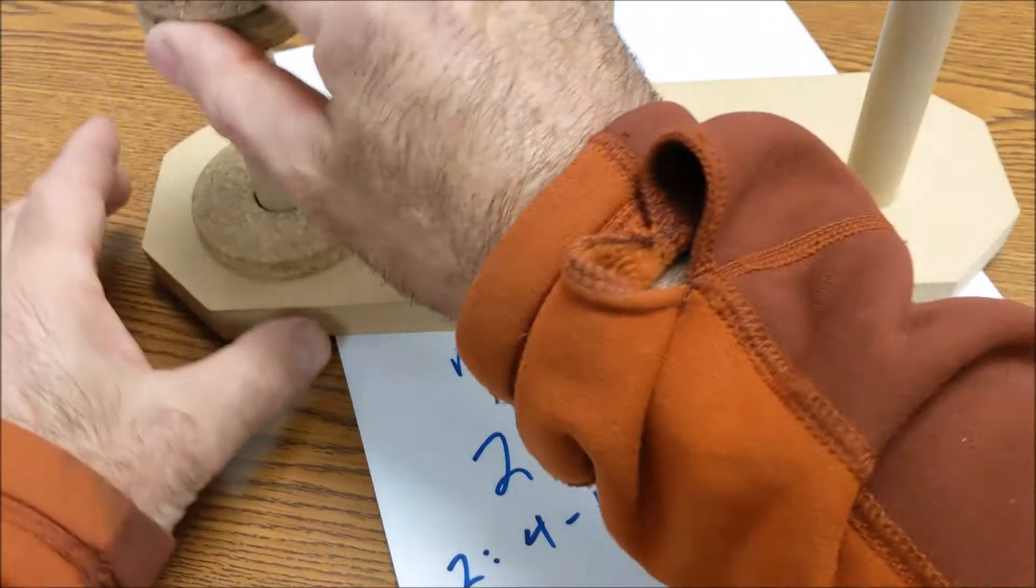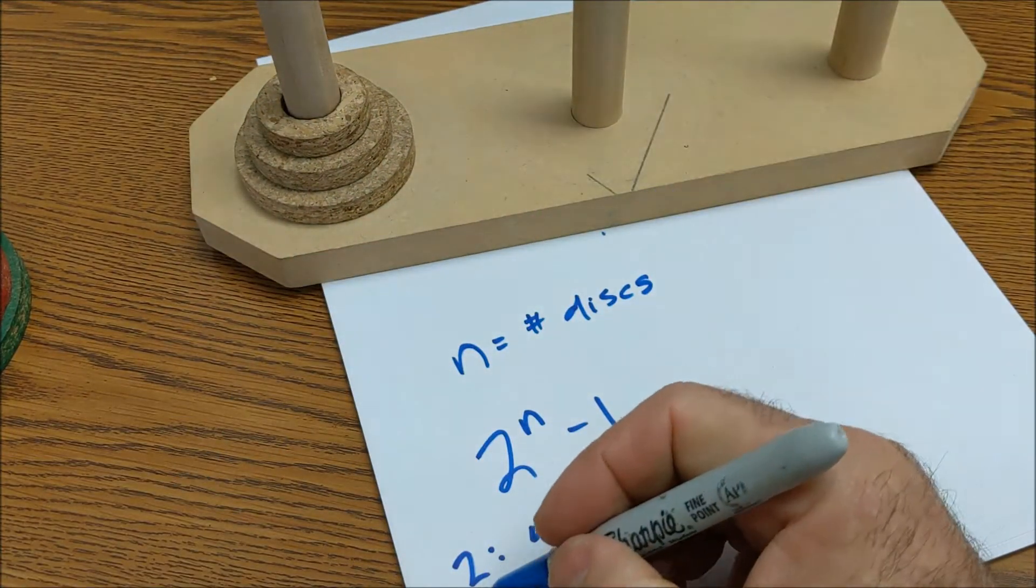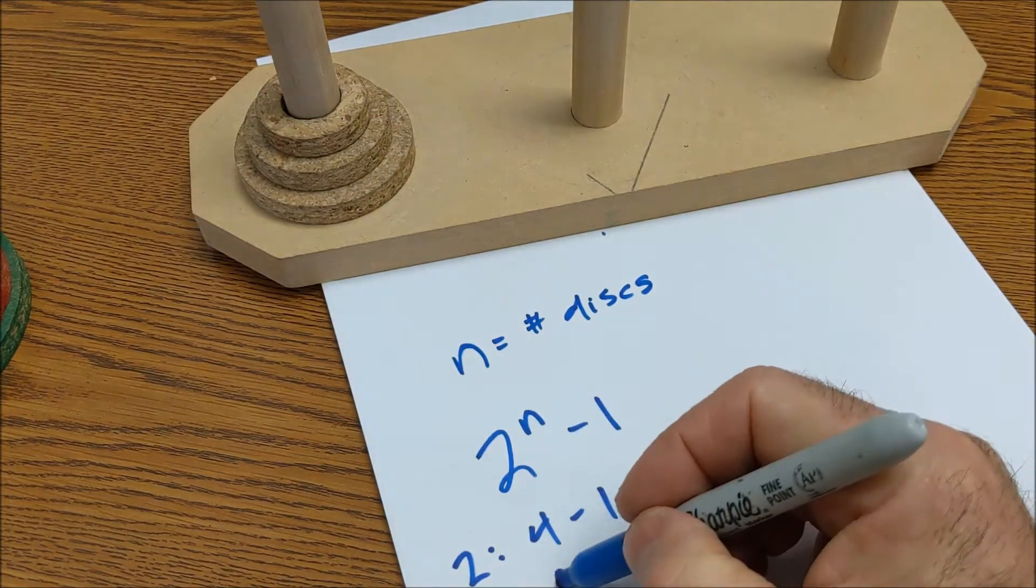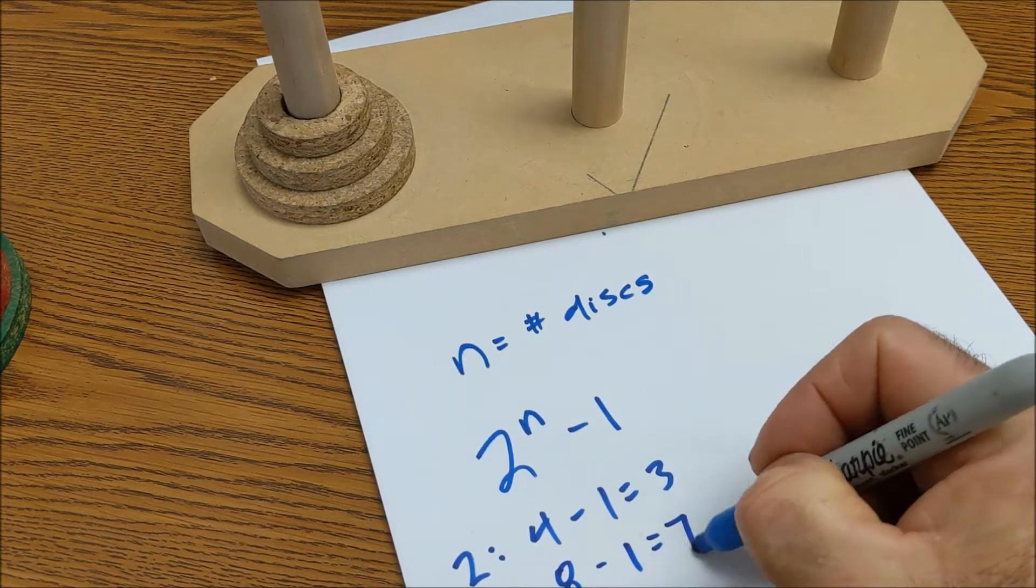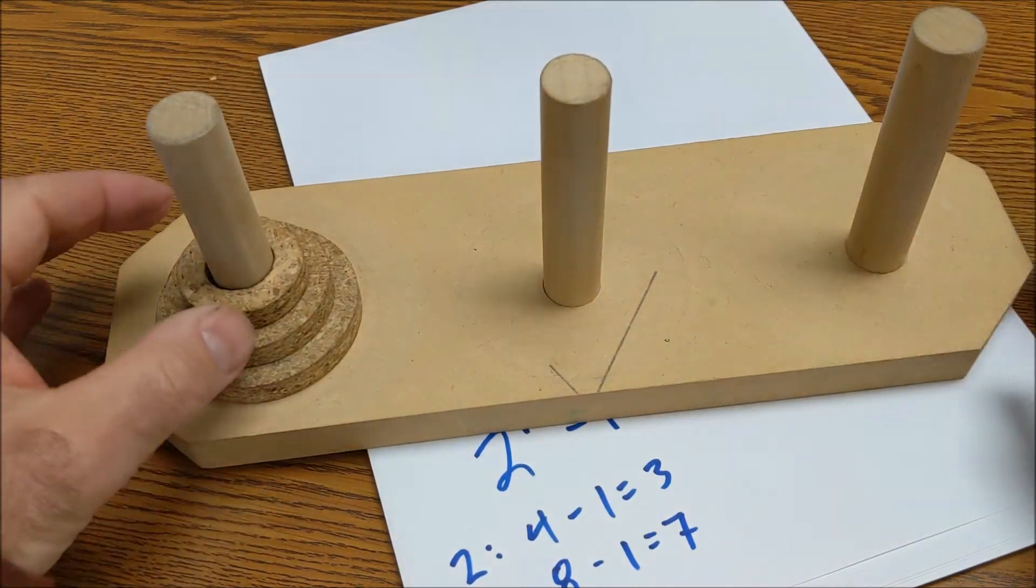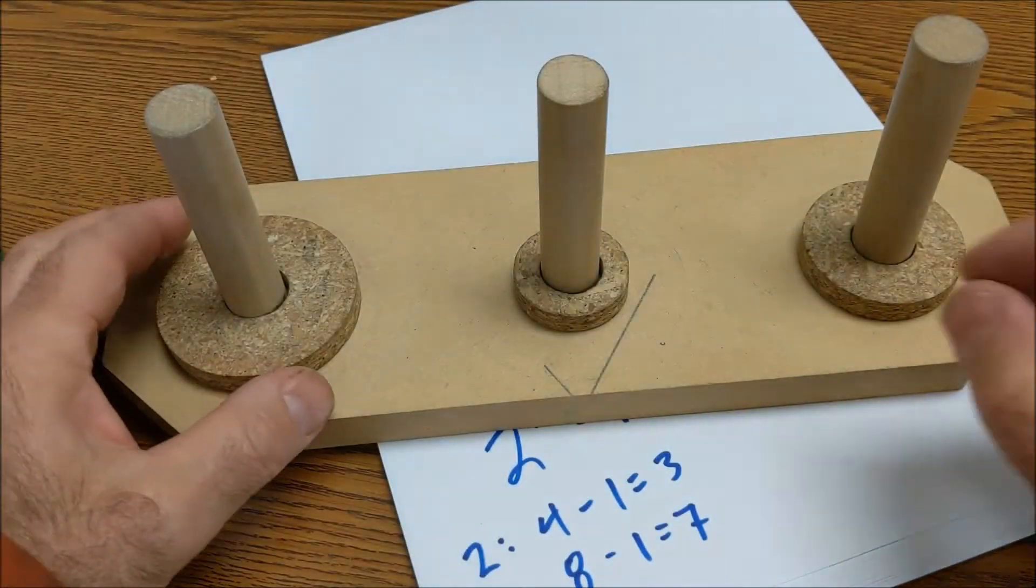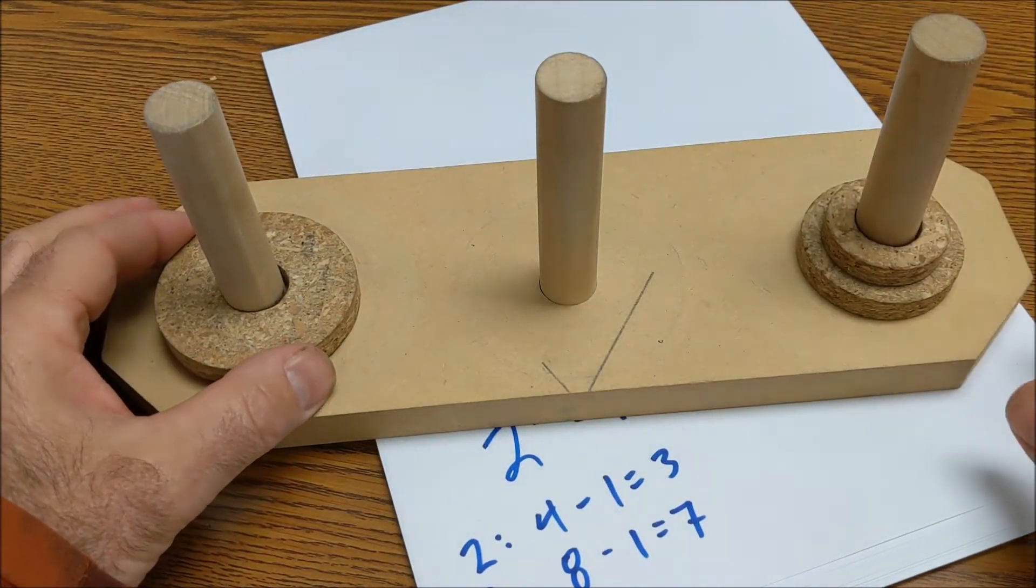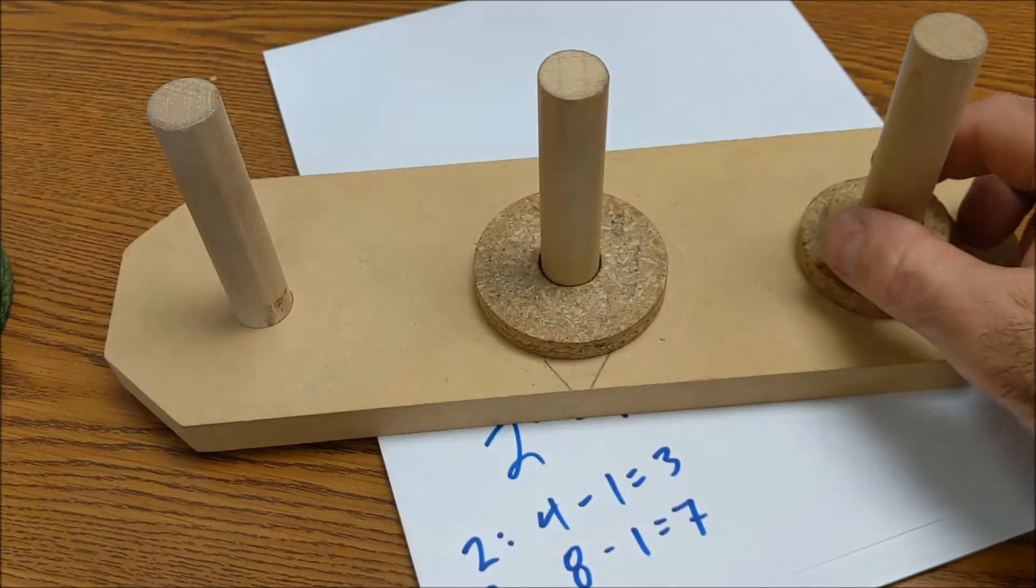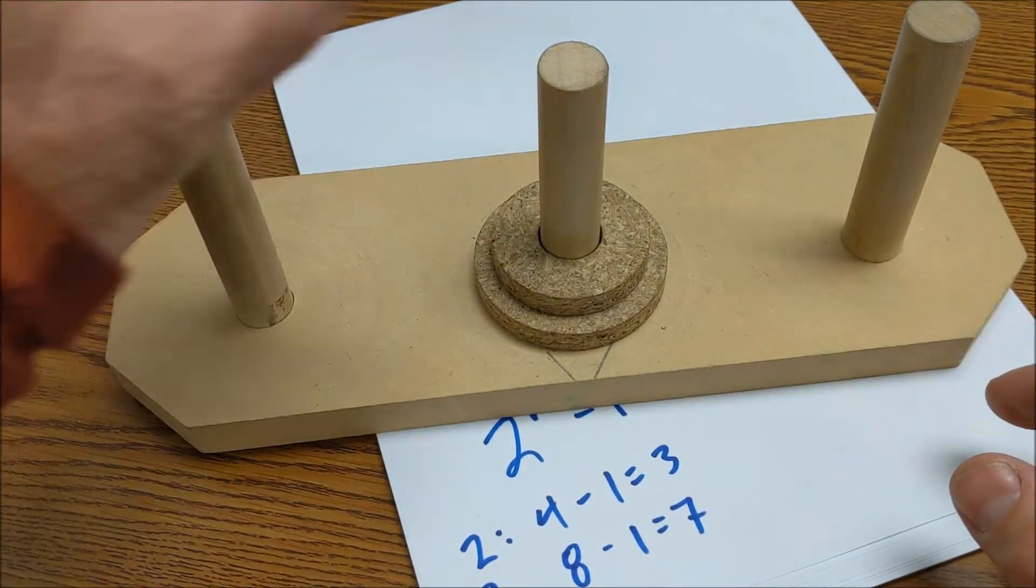Now if I have three disks, 2 to the third is 8 minus 1. The minimum number of moves I could do it in would be 7. So the way I do that is I go one, two, three, four, five, six, seven.